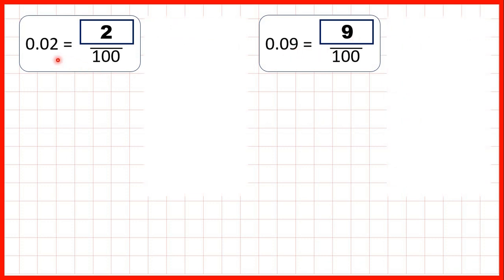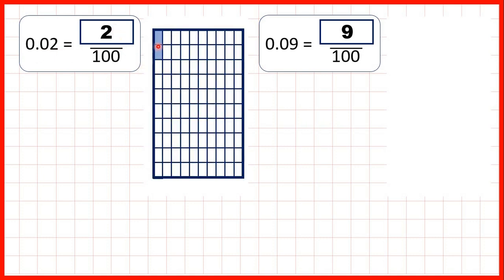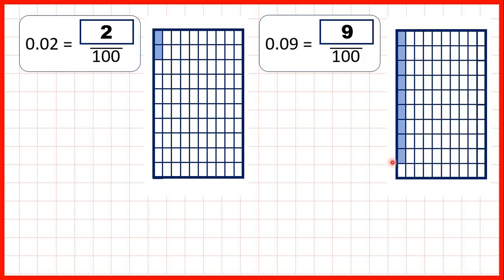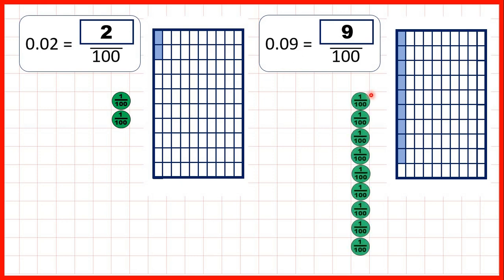And we can represent 0.02, or two hundredths, as two parts out of a hundred on a fraction bar. And we can represent 0.09, or nine hundredths, as nine parts out of a hundred. We could also show two hundredths using two place value counters for hundredths, or nine hundredths as nine hundredths place value counters.